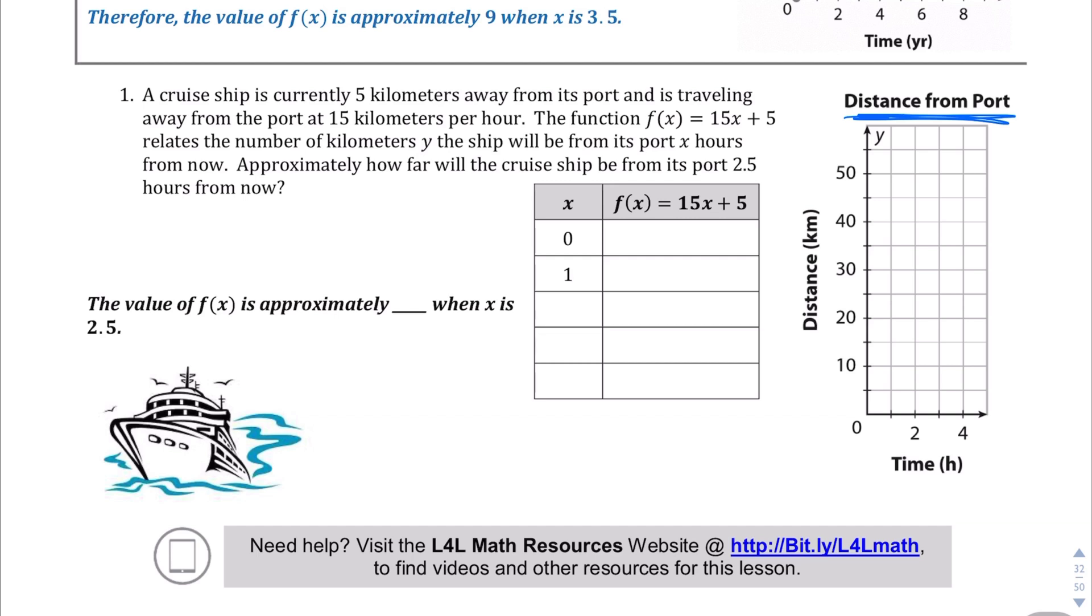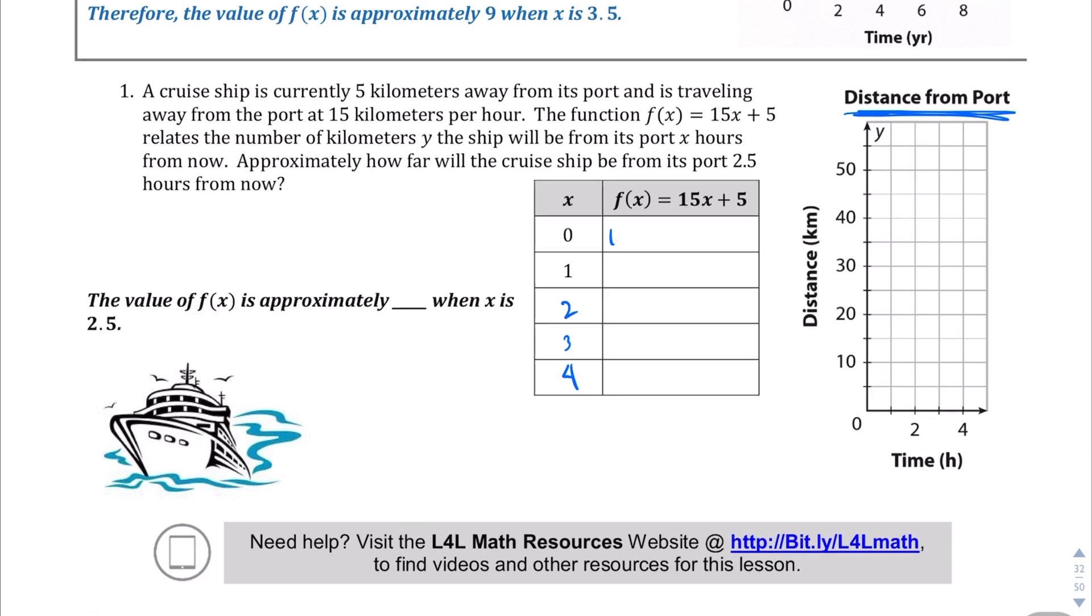Let's go ahead and fill in the x values. We're given the first two: zero and one. Let's pick two, three, and four. That makes sense because if we look at the independent values of our graph here, it only goes to four. So let's plug that in. We want to plug in 15 times zero. 15 times zero is zero, zero plus five is five. Let's plug in one: 15 times one is 15, 15 plus five is 20.